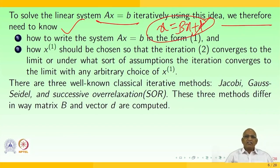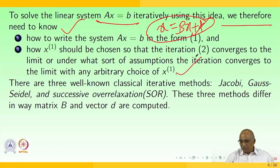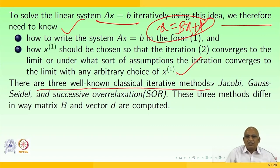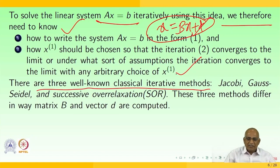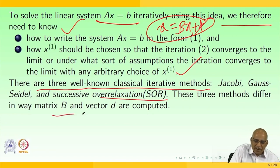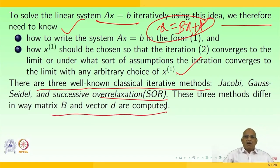With the hope that under certain mild conditions, the sequence x^(k) converges to the solution as k tends to infinity. We need to know how to choose x^(1) so that the iteration converges, or under what assumptions it converges for an arbitrary choice of x^(1). There are three well-known classical iterative methods: Jacobi, Gauss-Seidel, and successive over-relaxation. These three methods differ in the way matrix B and vector d are computed.